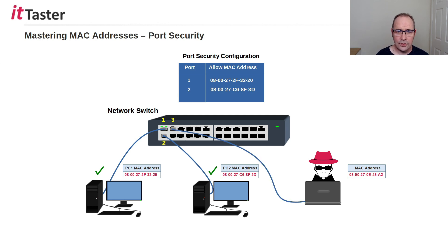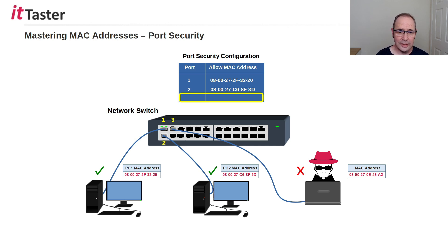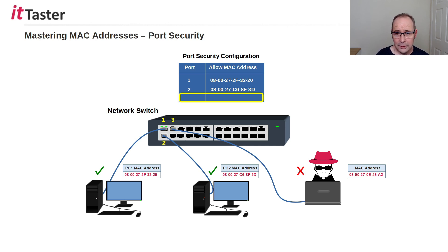When an attacker connects to the switch with an unknown MAC address that's not configured, the switch port — in this case a Cisco switch — will shut down by default, preventing the attacker from connecting to the network. Because port security limits the number of learned MAC addresses, should an attacker successfully connect and attempt a MAC flooding attack, bombarding the switch with thousands of random source MAC addresses, the port will simply shut down. However, a word of warning: limiting the number of MAC addresses for uplink ports to other switches will disable those ports.